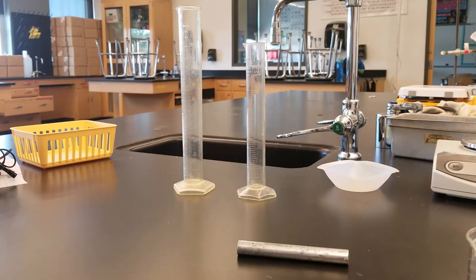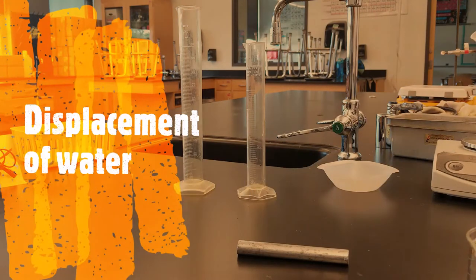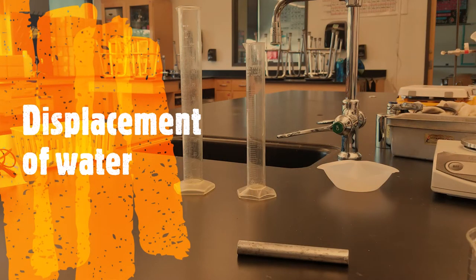In part two we are going to measure the volume of each of the five objects by using the displacement of water. Take a fifty milliliter graduated cylinder and fill it up to twenty-five milliliters.